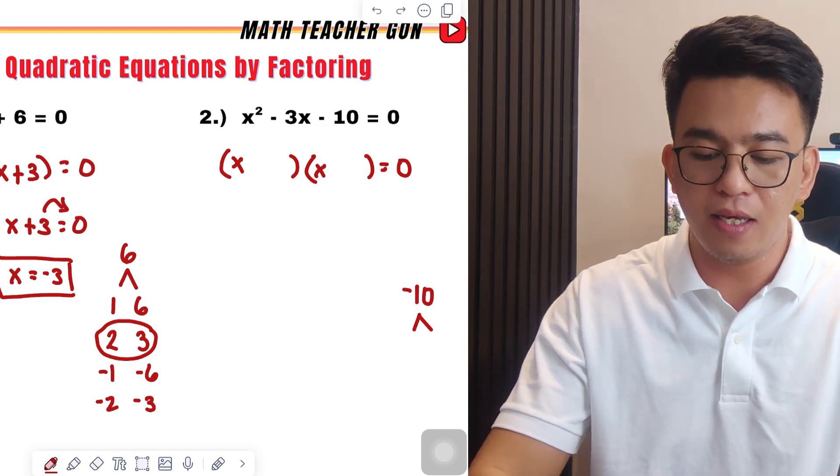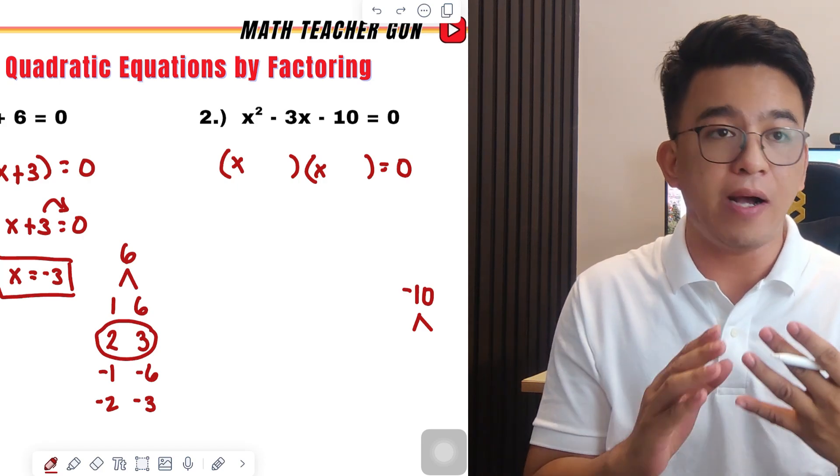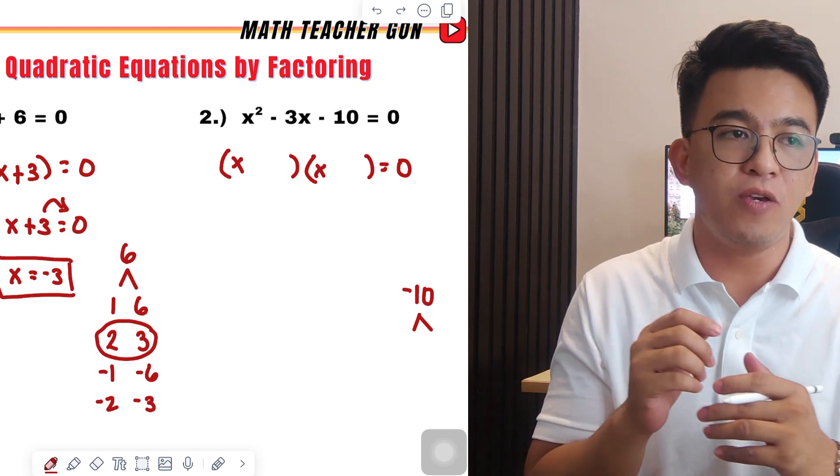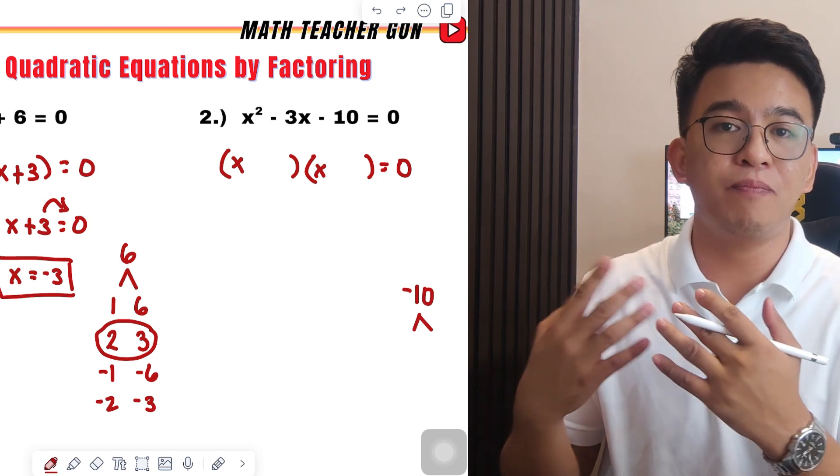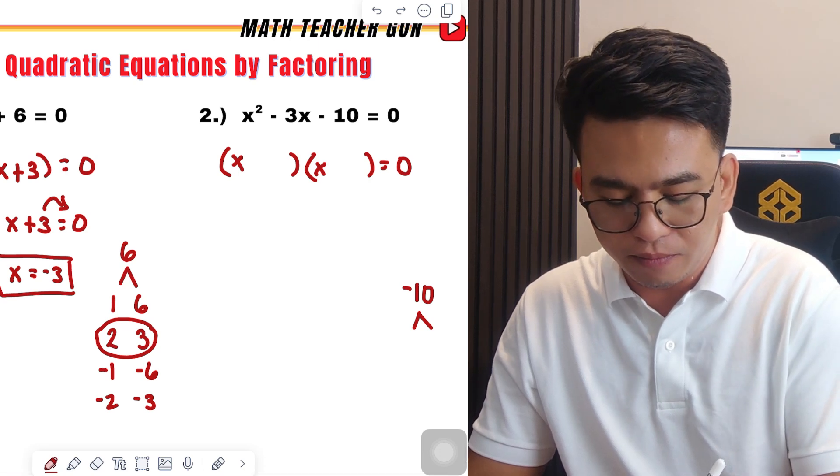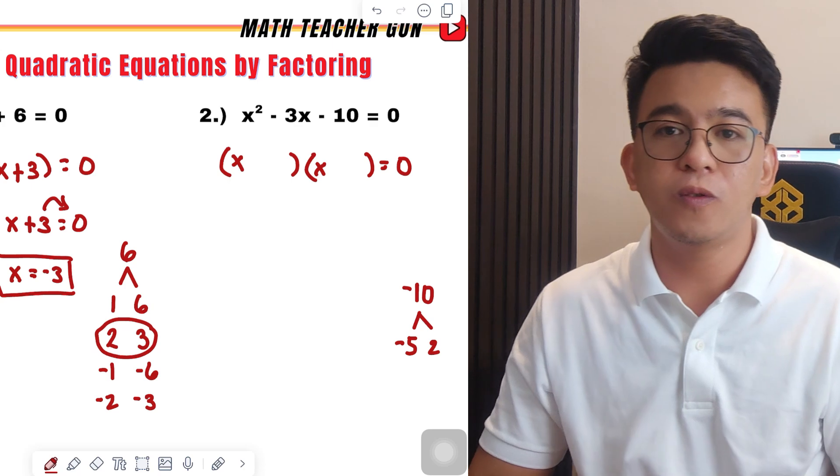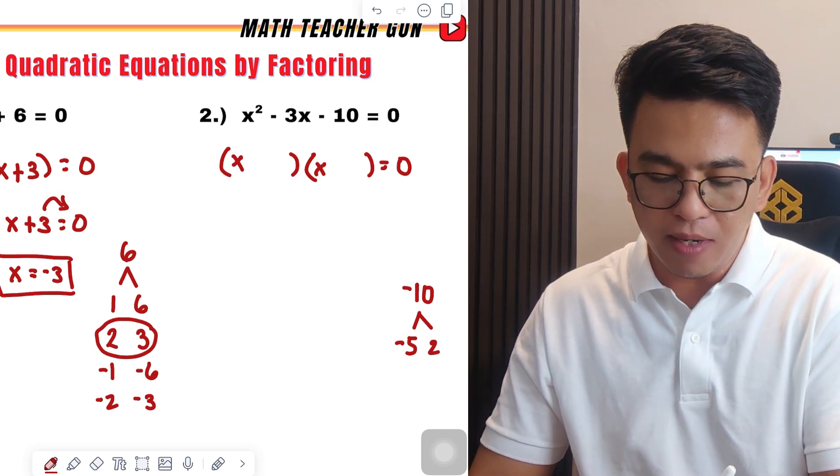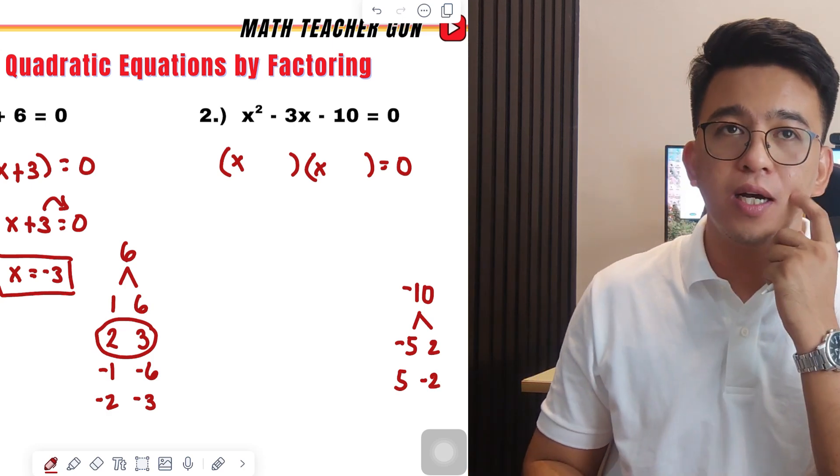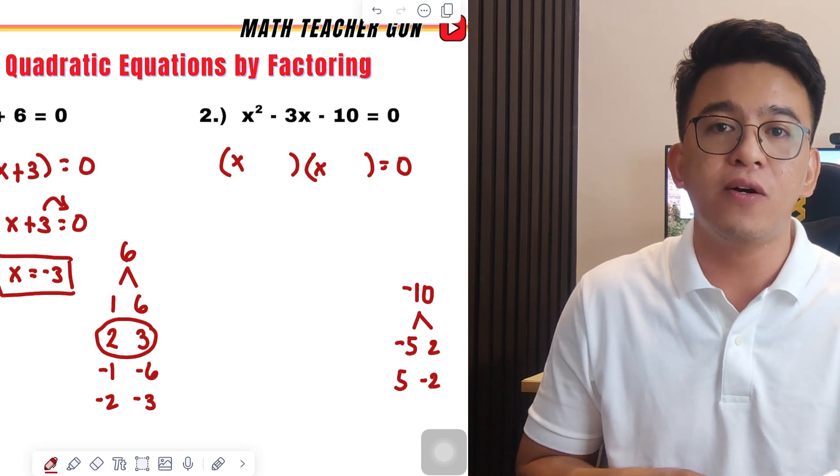So, what does that mean? Possible that one is positive and the other is negative, or one is negative while the other is positive. First, we have the closest which is negative 5 and 2. Then, it could also be positive 5 and negative 2. Now, what about 1 and 10? Possible? Yes. But you know, it's too far to get 3. That's why I focused on 5 and 2.